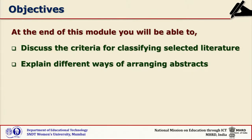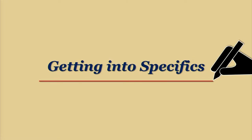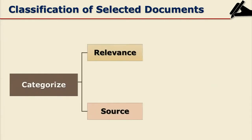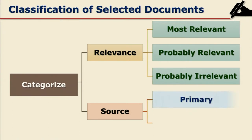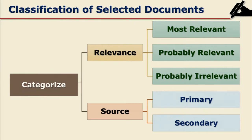And explain different ways of arranging the abstracts. Getting into specifics, after selecting the documents it is advisable to classify the documents. We are going to explain convenient ways of categorizing the documents, which will facilitate writing a research review. When you categorize, you can categorize the material in two ways.